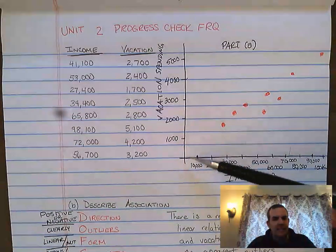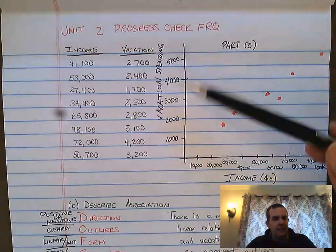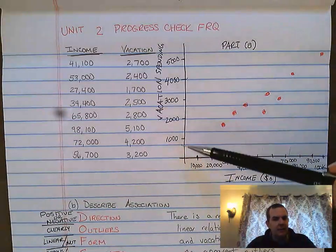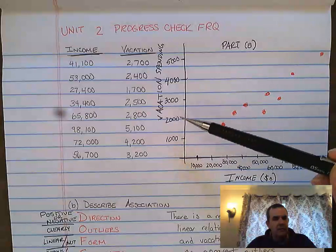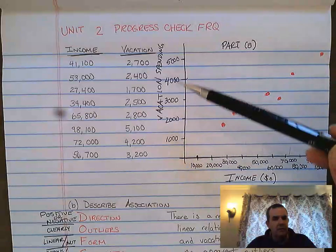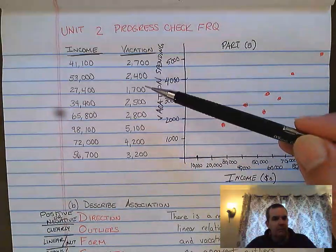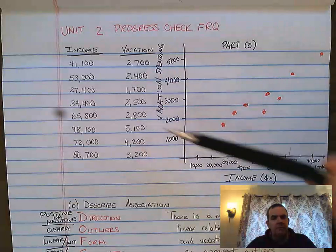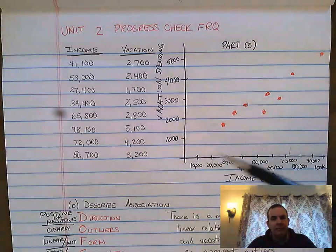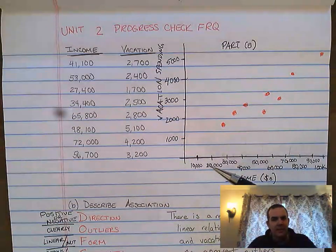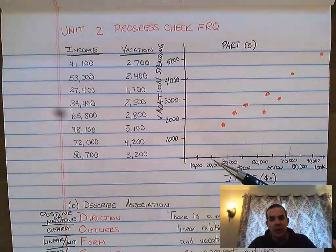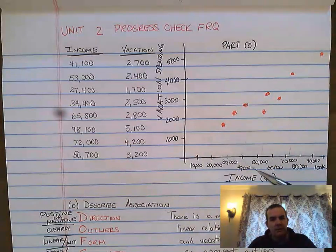What I did is I scaled and labeled everything. The vacation spending axis starts at zero at the bottom, going 1,000, 2,000, 3,000, 4,000, 5,000 — based on the fact that the data runs from 1,700 to 5,100. For income, I scaled everything by 10,000 — you could use any consistent interval. I did 10, 20, 30, 40, 50, 60, 70, 80, 90, 100,000.